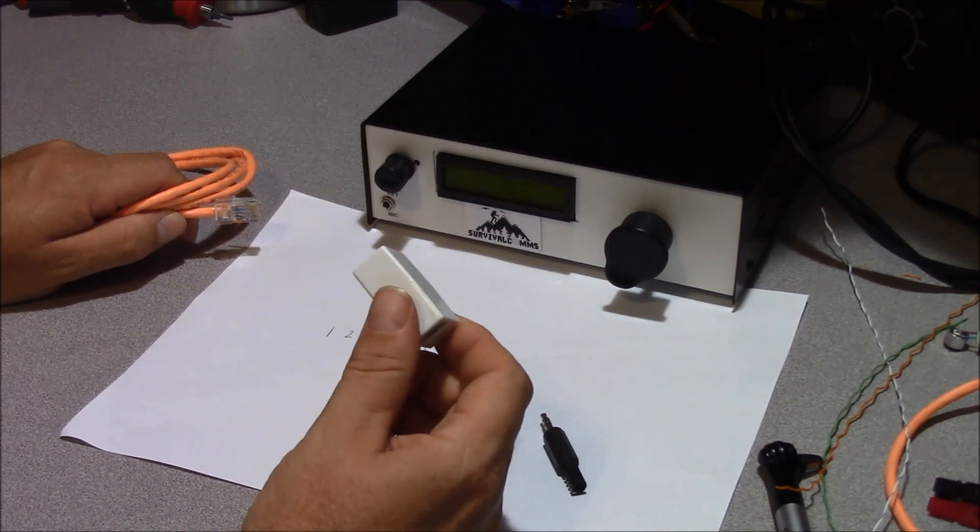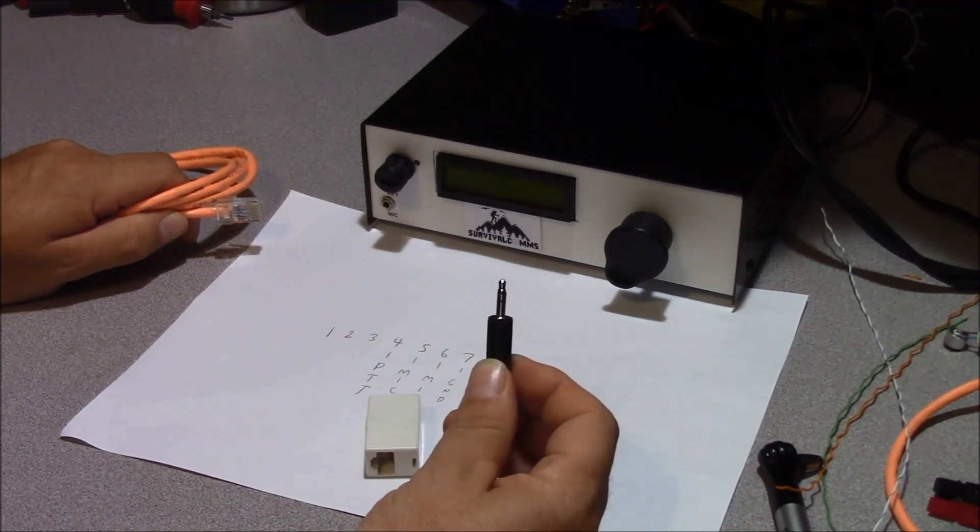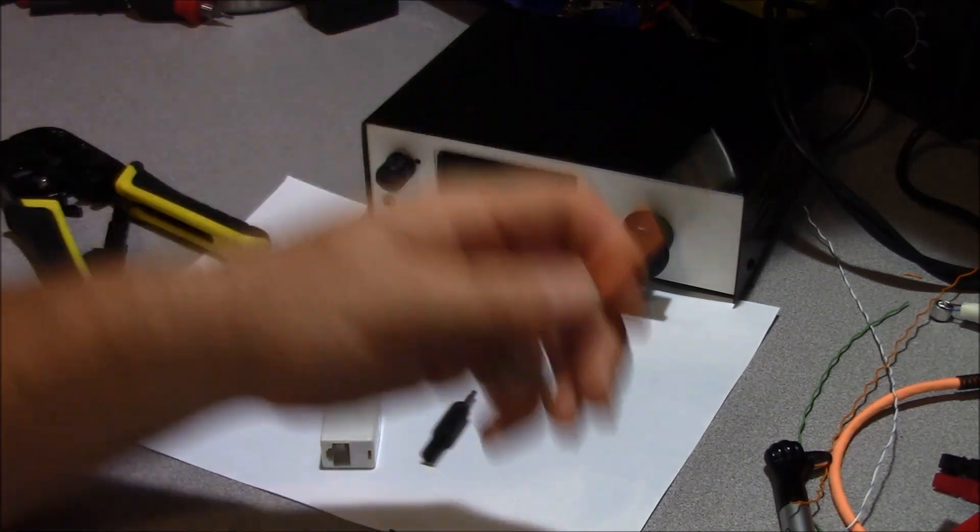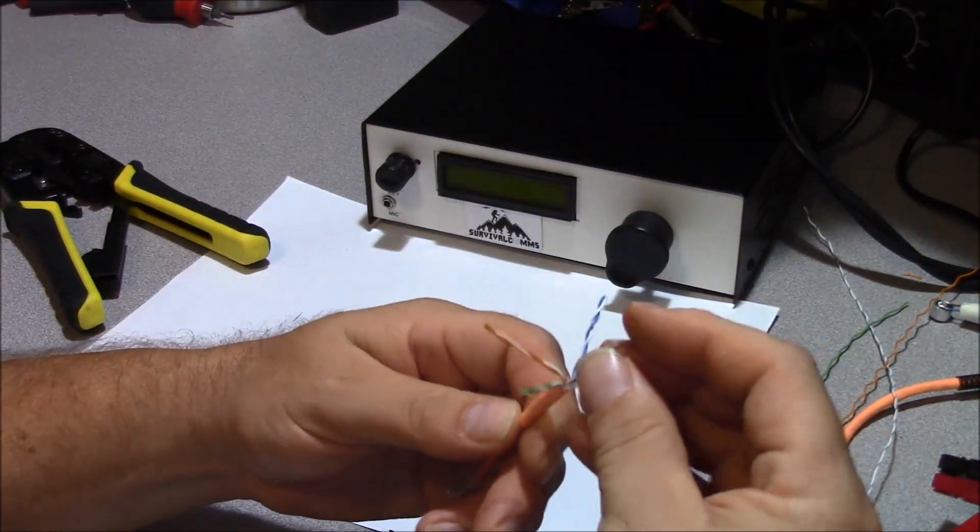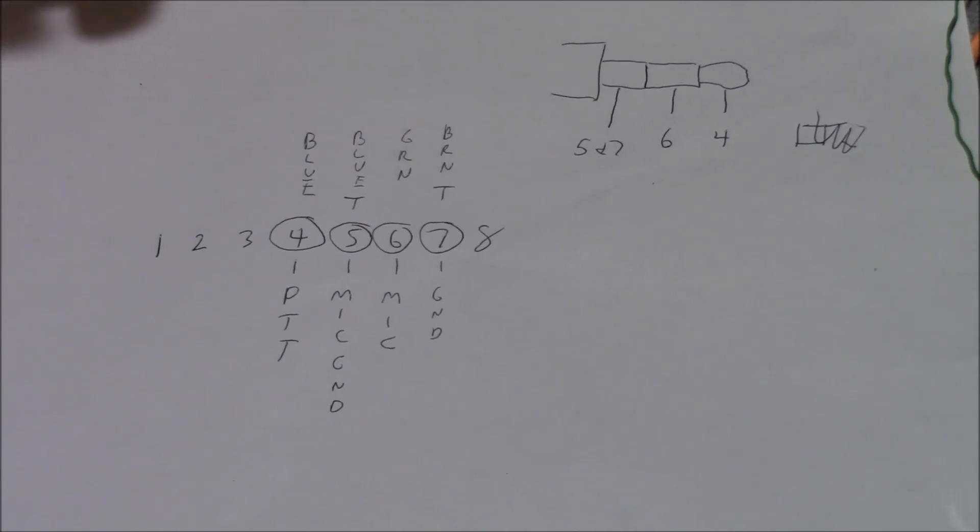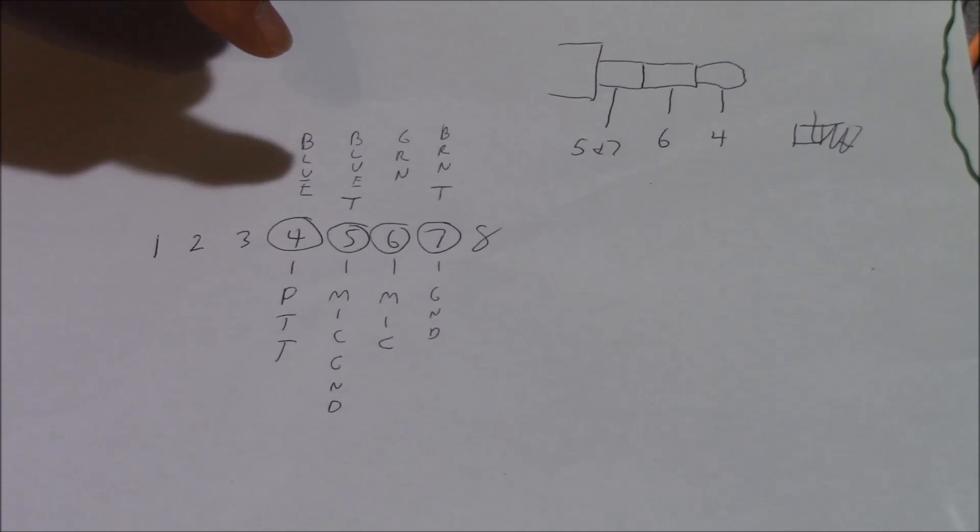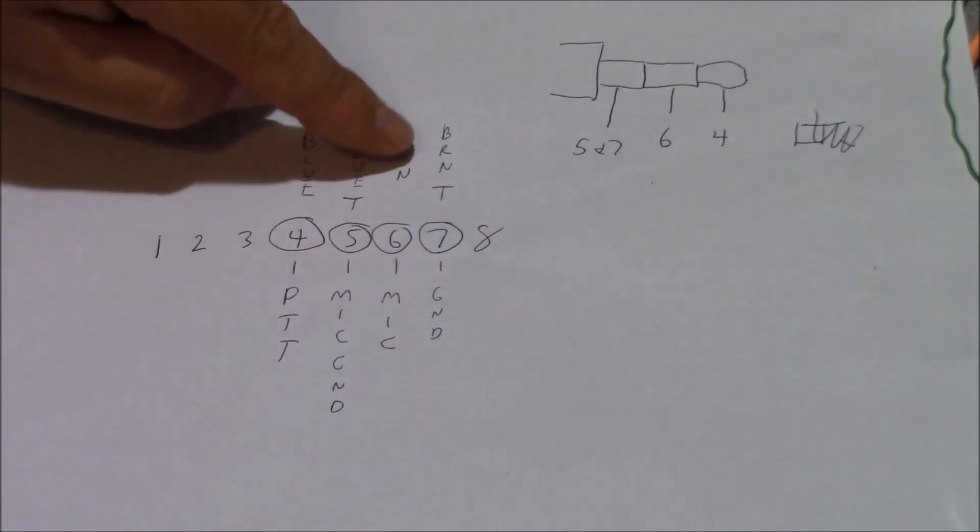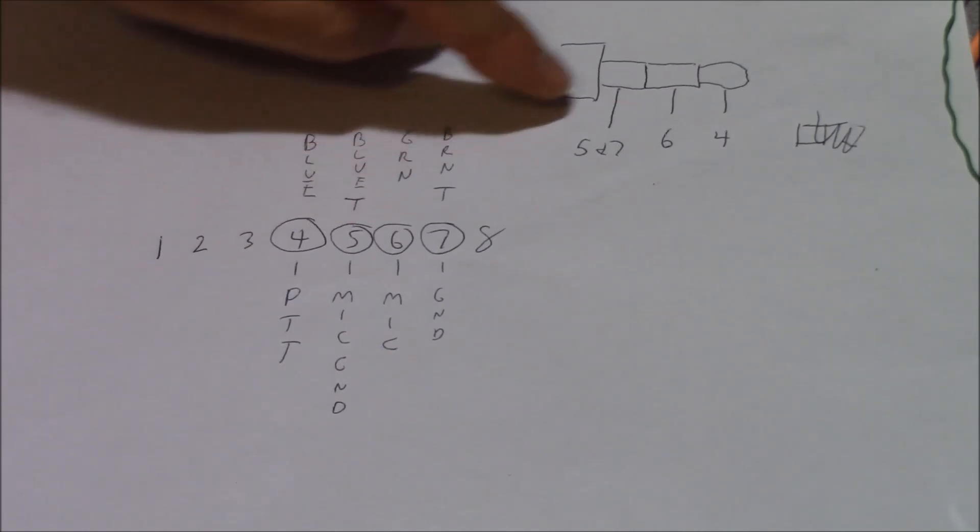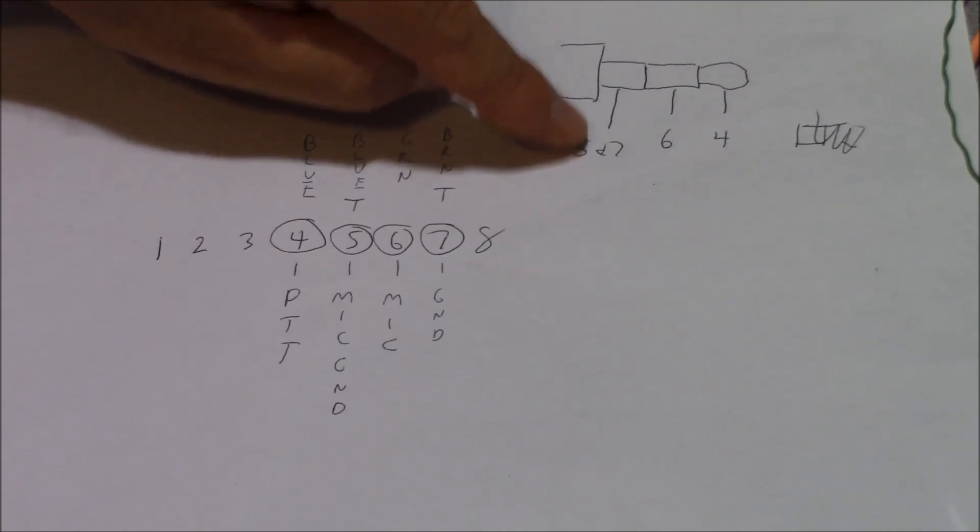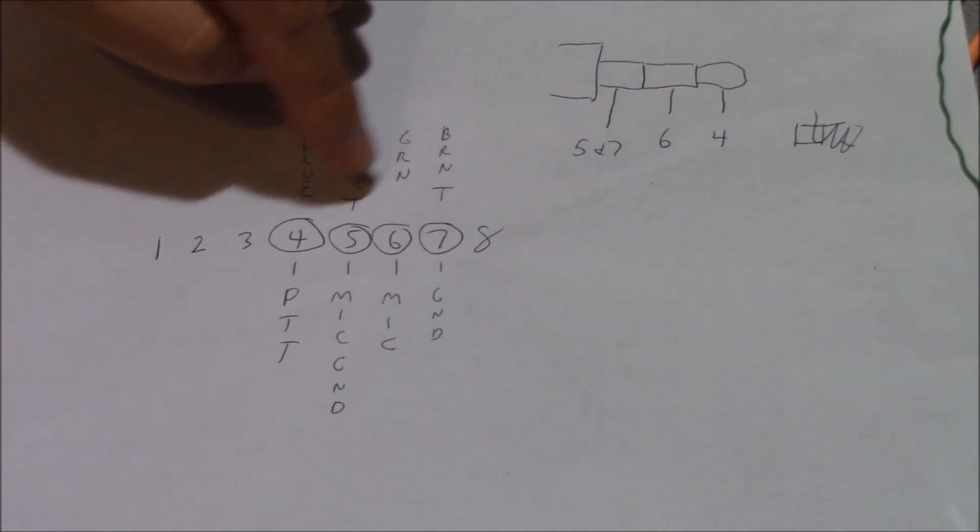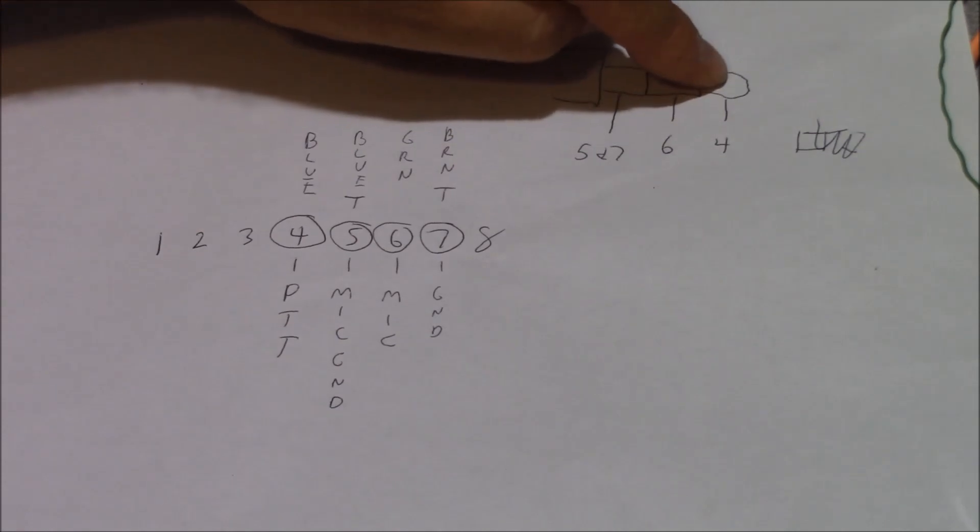An RJ45 coupler and a 3.5mm stereo plug. So, go ahead and strip back about an inch of insulation, separate all of your pairs. And this is all we have to do. Knowing what we know about Cat5, our push-to-talk is going to be blue. Our microphone ground is going to be our blue with trace. Our microphone audio is going to be the green wire. And our ground wire is going to be our brown trace wire. So, what we're going to do is, we're going to bring pin number 5 and 7 together on the sleeve. And then we're going to take number 6 as our microphone and bring it to our ring. And then we're going to bring number 4, our blue wire, to our tip, push-to-talk.